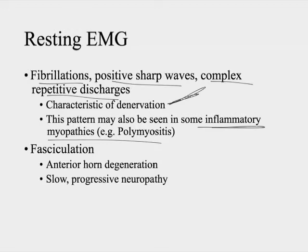I saw some literature that talked about fasciculations and some that talked about fascillations — I'm not sure if these are misspellings of the same thing or two different phenomena, but I believe they indicate damage to the anterior horn or slowly progressive neuropathy.